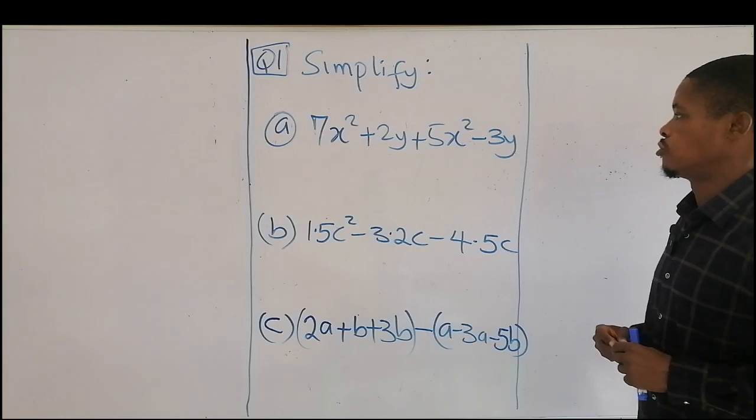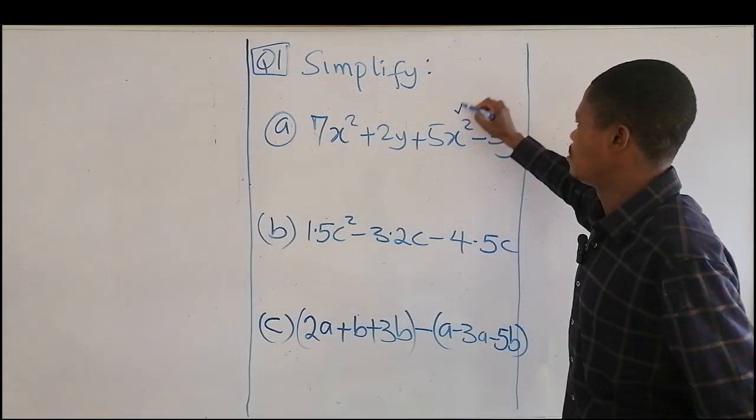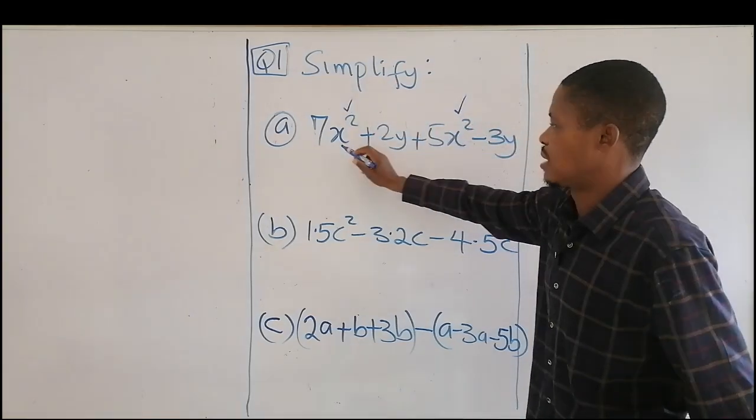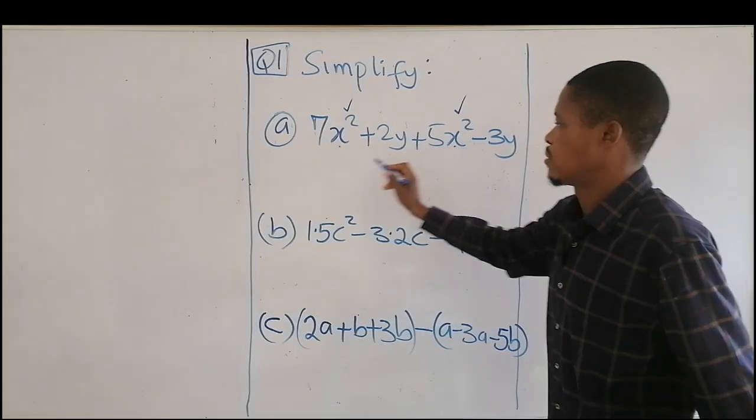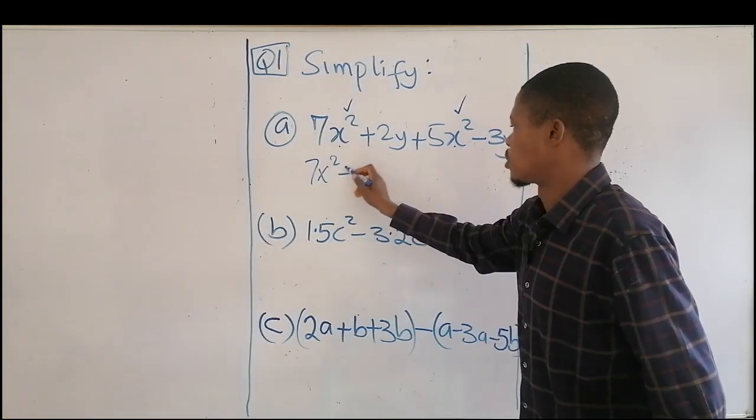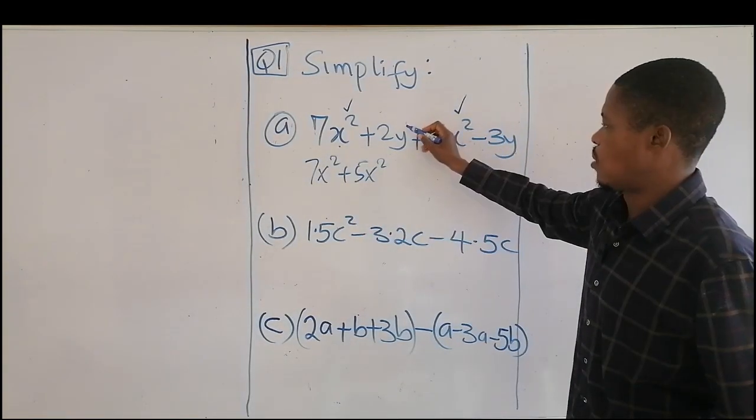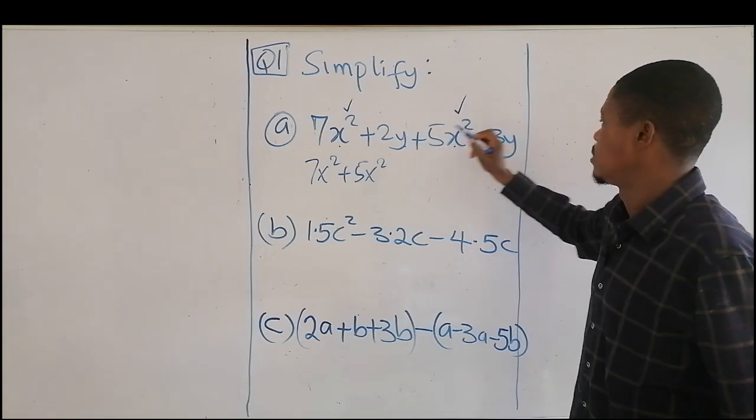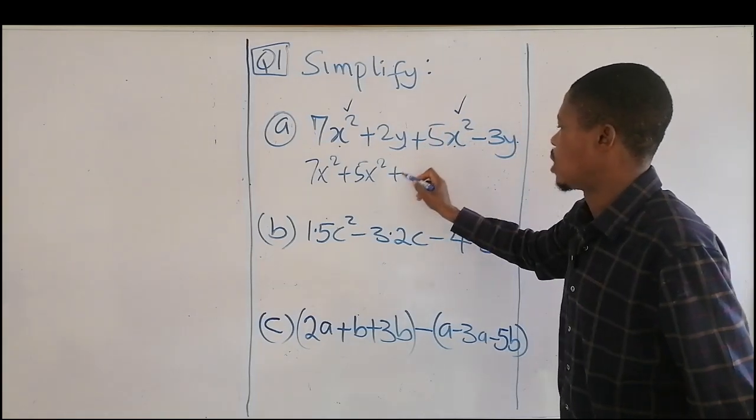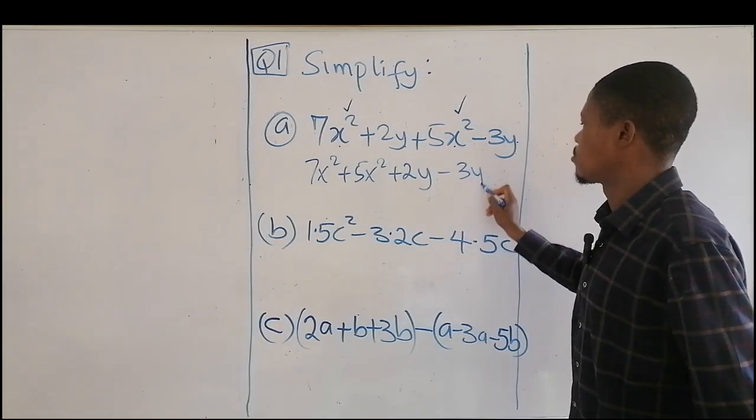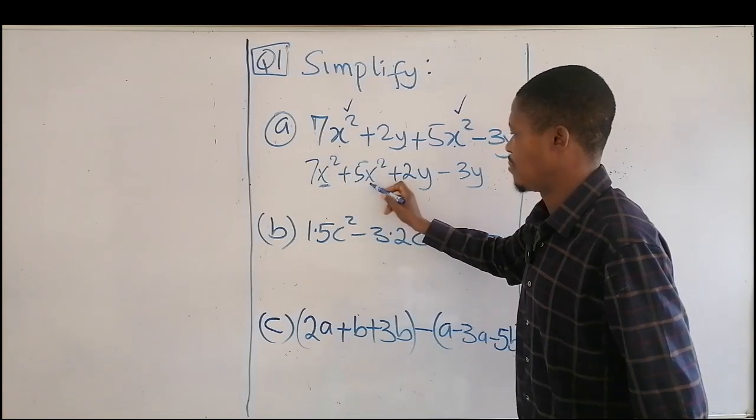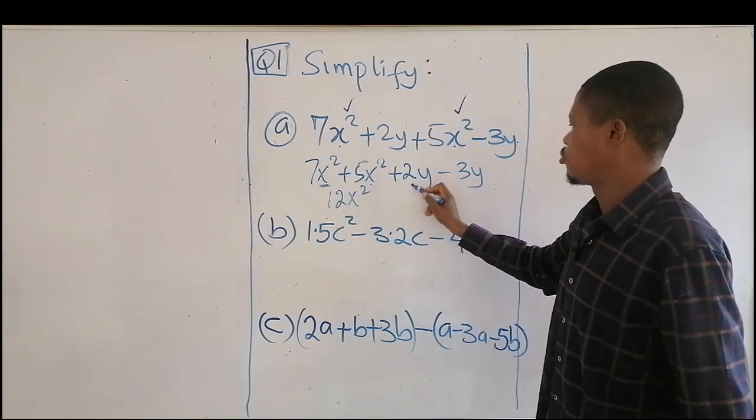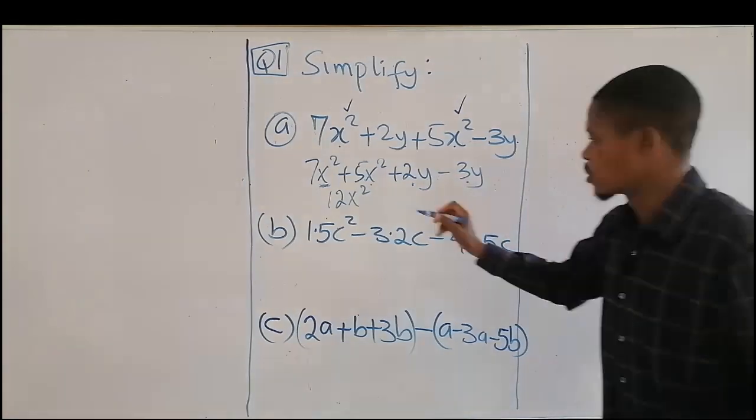What we do is pull together those of the same power. This is 7x² and 5x², so this will be 7x² plus 5x². The y is power one, so we have plus 2y minus 3y. Adding together, this is 12x² plus 2y minus 3y, that will give minus y.